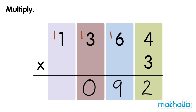Finally, multiply the 1000s. 3 times 1,000 equals 3,000. 3,000 plus 1,000 equals 4,000. 1,364 times 3 equals 4,092.